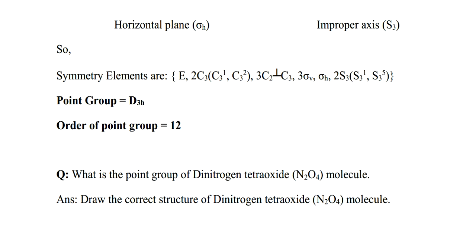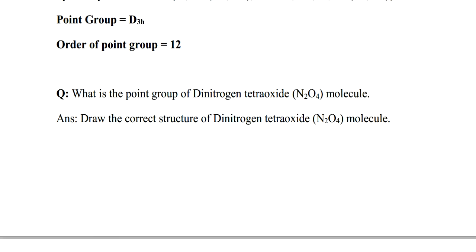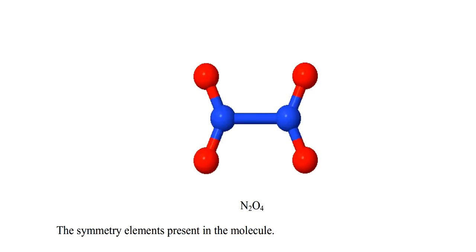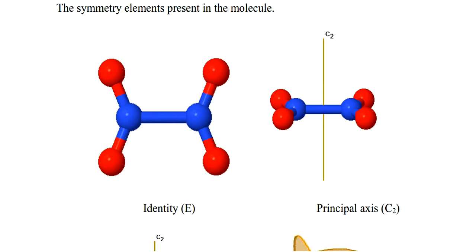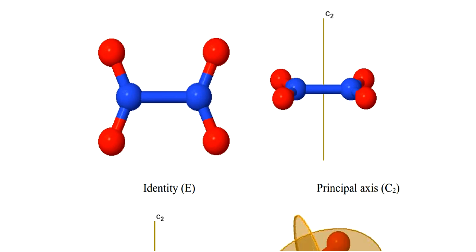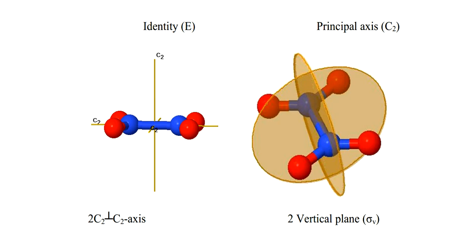The next question is: what is the point group of the dinitrogen tetraoxide molecule? Can you draw the structure of N2O4? This is the structure of dinitrogen tetraoxide. The symmetry elements are: identity, a C2 principal axis passing through the origin, and two C2 axes perpendicular to the principal axis. There are also two vertical planes of symmetry parallel to the principal axis.